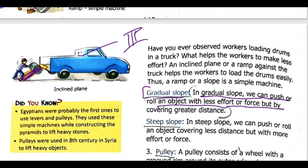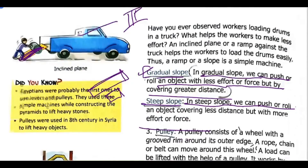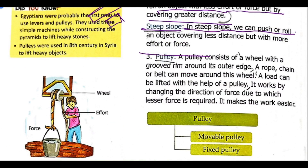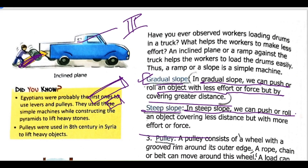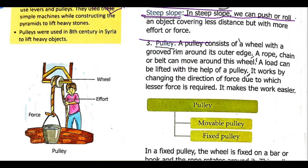Second is steep slope. A gradual slope has a longer ramp and requires less effort, while a steep slope has a smaller ramp but requires more effort and force. So we have seen two types of slope: gradual and steep. Next our topic is wheel, pulley.